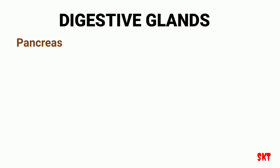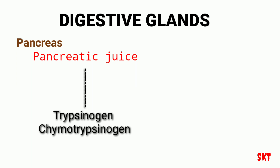The next gland is the pancreas. It produces pancreatic juice which is carried by the pancreatic duct into the distal or ascending rim of the duodenum. It contains two proenzymes — trypsinogen and chymotrypsinogen — and several enzymes. The juice acts on all types of food: proteins, starch, fats, nucleic acids, nucleotides and nucleosides, breaking them down to aid digestion.